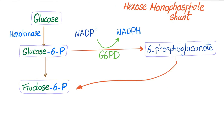To get an idea of G6PD deficiency, let's go back to biochemistry and glycolysis, where glucose will become pyruvate down the road. We have glucose, and thanks to hexokinase, now we have glucose 6-phosphate. Glucose 6-phosphate will be converted into fructose 6-phosphate. This is normal glycolysis.